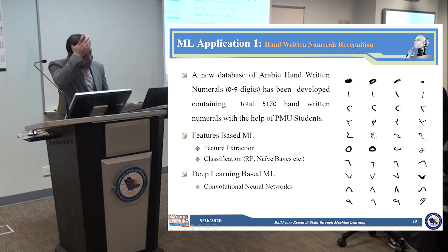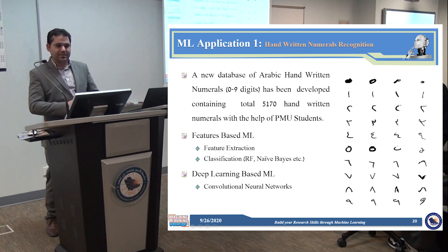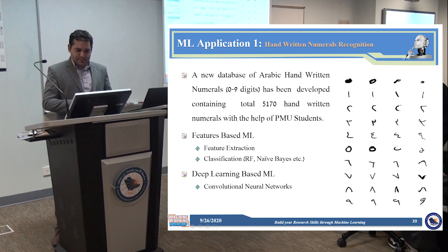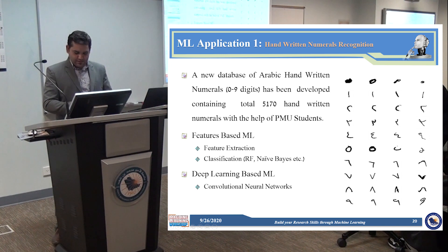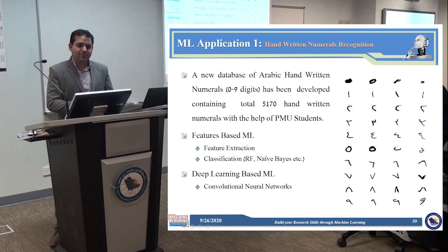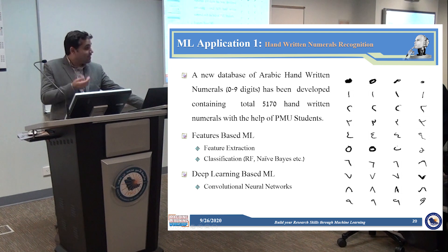So we are done with the first part — the overview of machine learning, the importance of machine learning, and its applications. Now I will go to specific examples. I will cover two examples: one is handwritten numeral recognition, which we have worked on in the last two or three years, and the other is brain tumor classification.